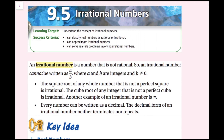Every number can be written as a decimal. The decimal form of an irrational number neither terminates nor repeats. For rational numbers, they either terminate, which means they end, or they repeat, which means we could write a repeating sign. But irrational numbers neither terminate nor repeat.